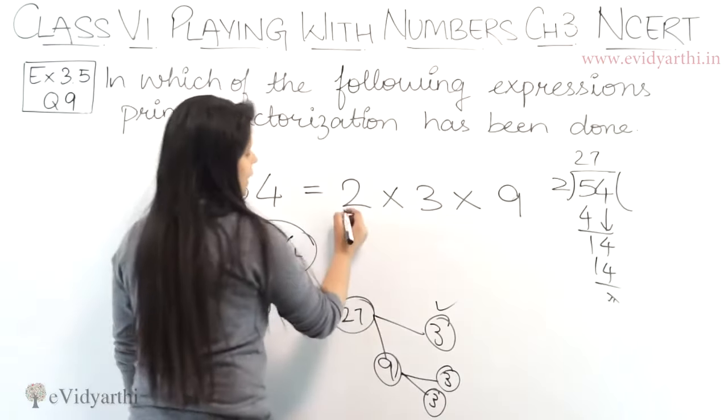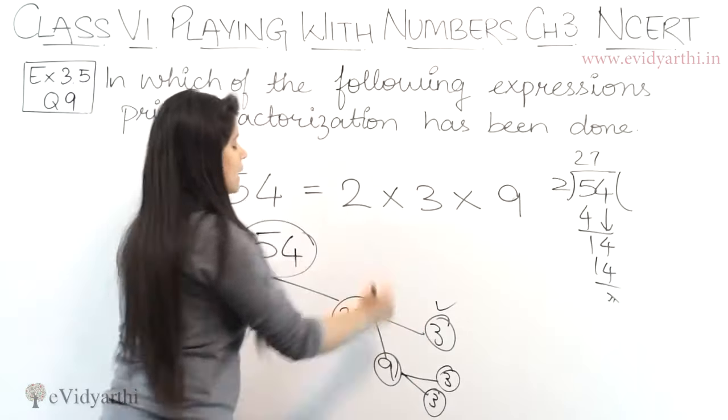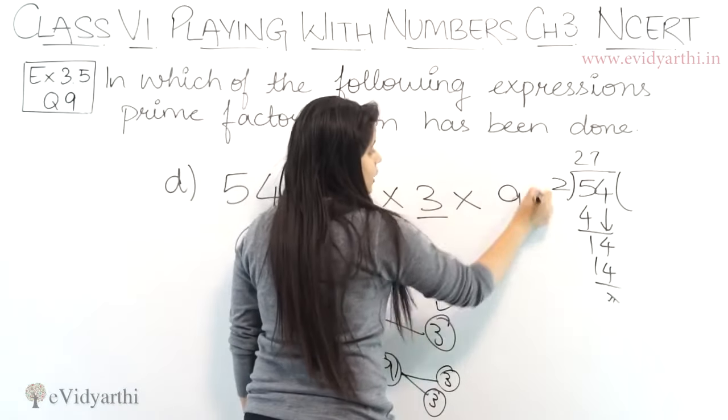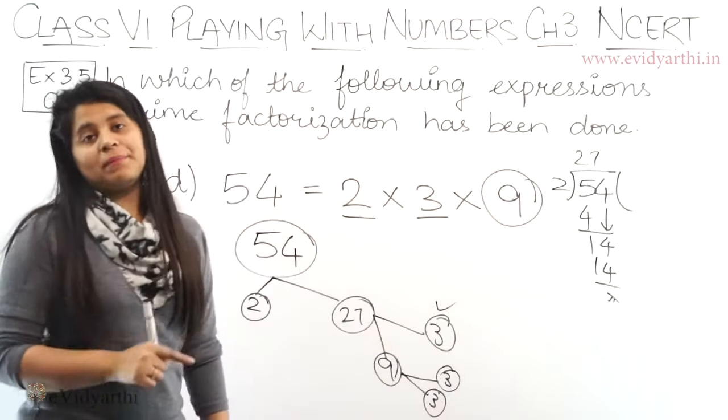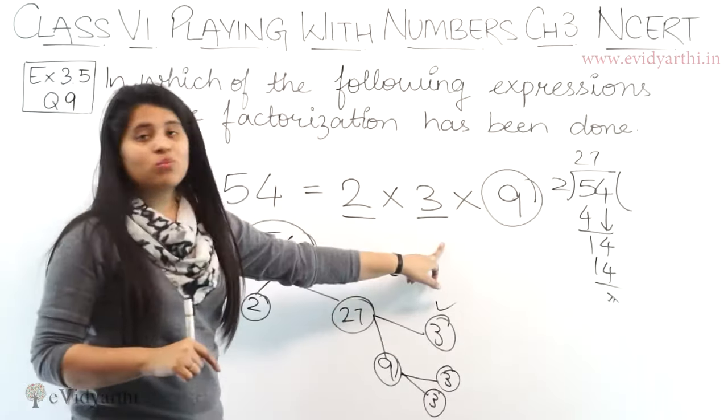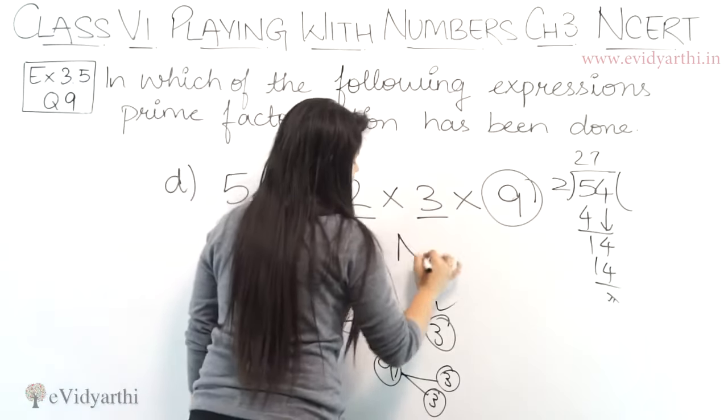Here what have they done? 2 into 3 or 3 into 3 they have written as 9. 9 is not a prime number. So this means this one is not considered as prime factorization. So I will write no.